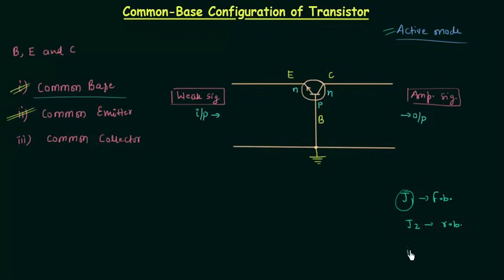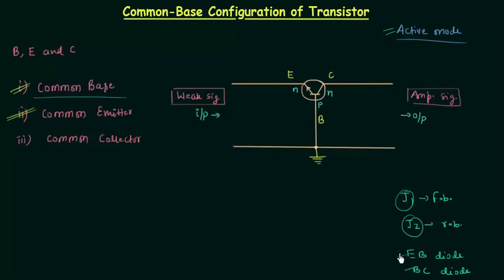Junction J1 is the junction of diode EB, and junction J2 is the junction of diode BC. We can consider a transistor as two diodes connected back to back, so diode EB is forward biased and diode BC is reverse biased in active mode.